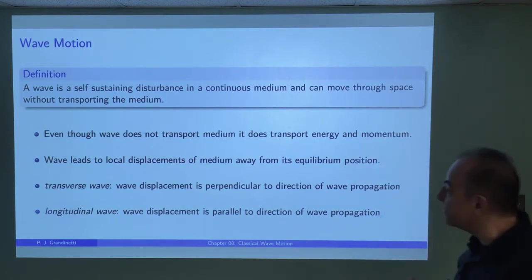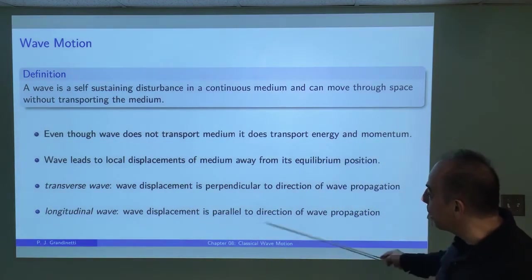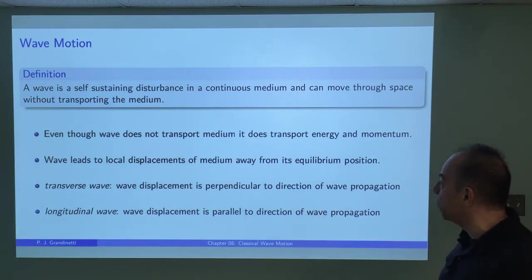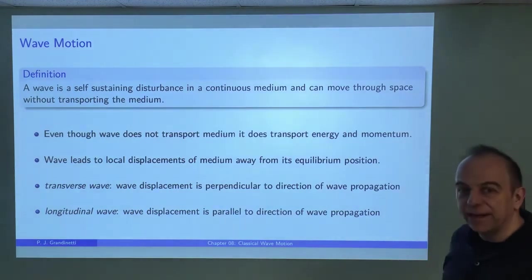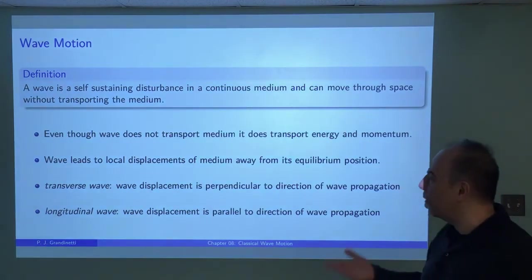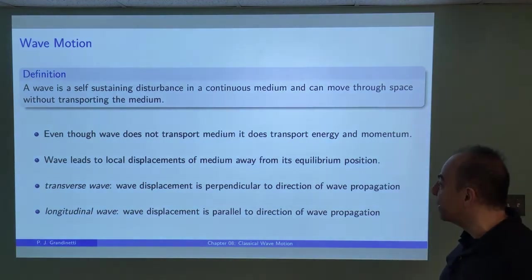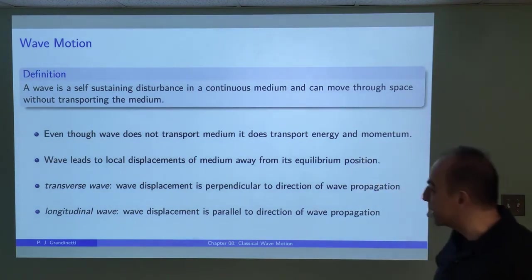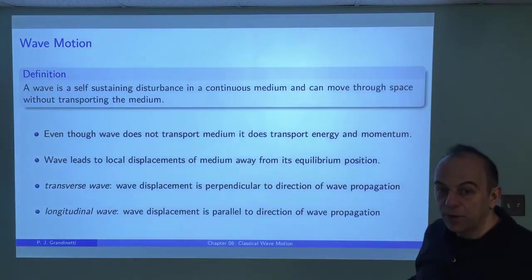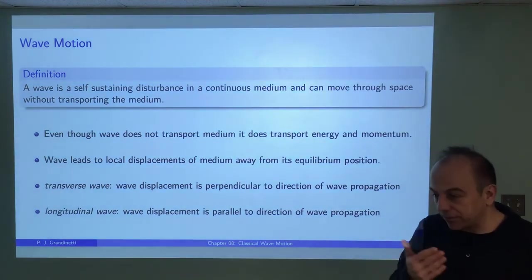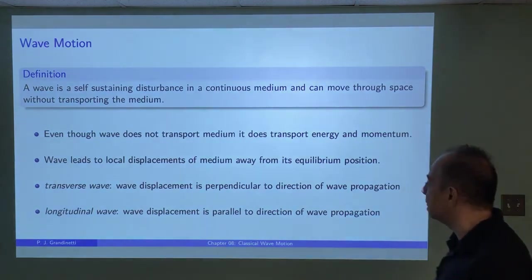We're going to classify waves into two types: transverse waves and longitudinal waves. A transverse wave is one where the displacement is perpendicular to the direction in which the wave is propagating — the tsunami wave is an example of a transverse wave. A longitudinal wave is one where the displacement is parallel to the direction of wave propagation — sound waves, like me speaking right now, are longitudinal waves moving towards the microphone.